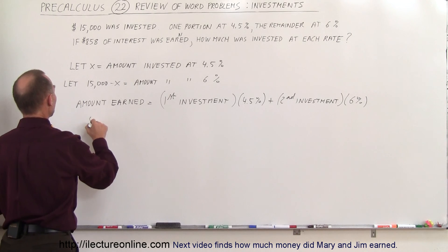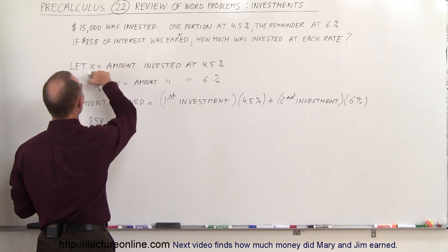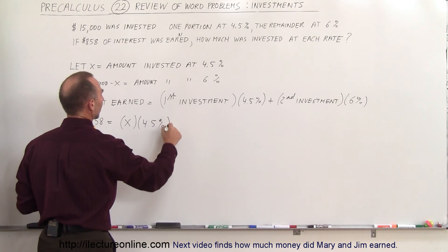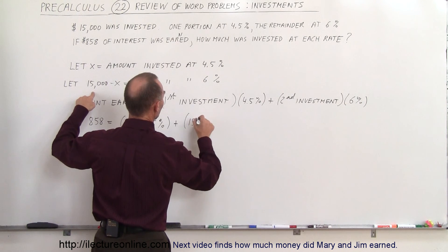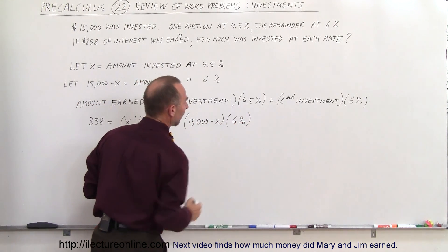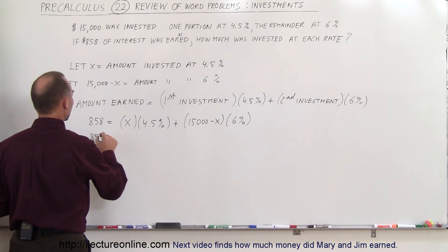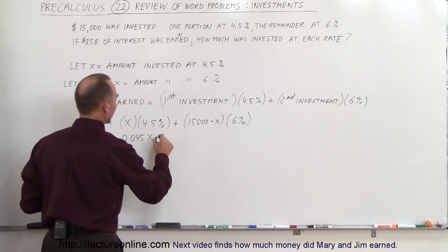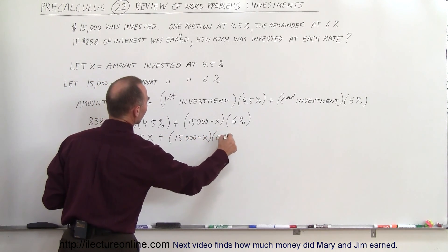The amount we earn is 858. So 858 is equal to the first investment, which is x, that's the amount invested, times 4.5% plus the amount invested at 6%, which is 15,000 minus x times 6%. And now we're going to convert from percent to decimals. So here we have 858 is equal to 0.045x plus the quantity 15,000 minus x times 0.06.